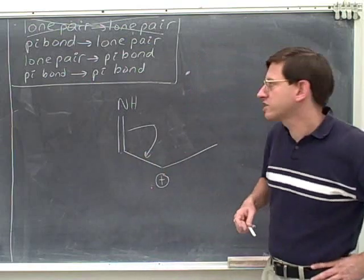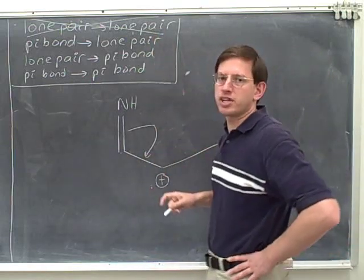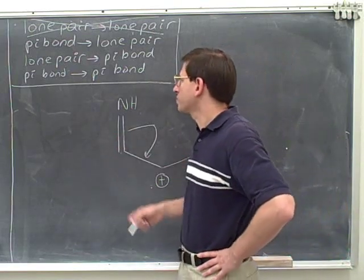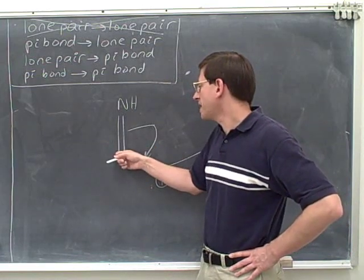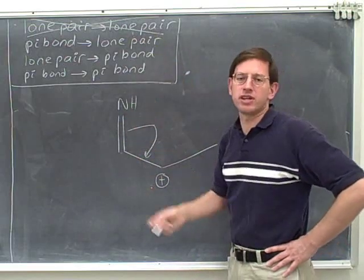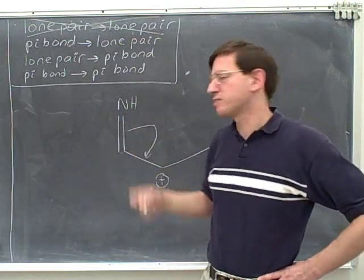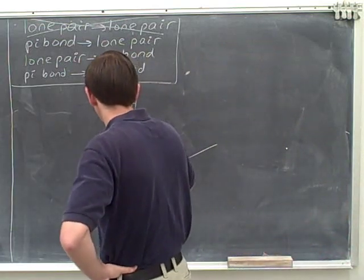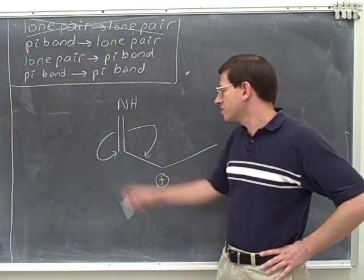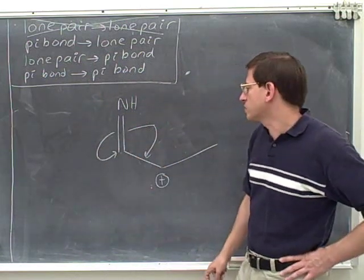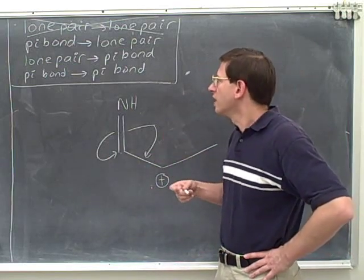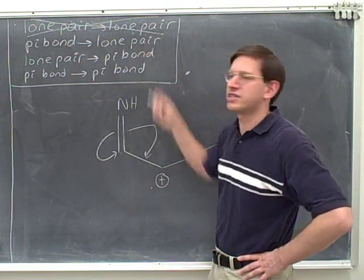When you're using the as close as possible rule, you're not comparing these transitions to each other. When we move this pi bond, we have two choices: we can make the pi bond into a lone pair, or we can make the pi bond into another pi bond. You can't choose between different transitions on the basis of as close as possible. Here are two transitions we might possibly make — we might make this transition, or we might make this transition. Either of these are legal; you can't choose between these by saying that this is putting it closer.